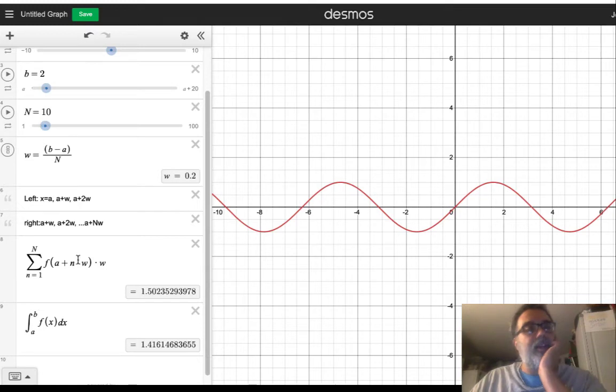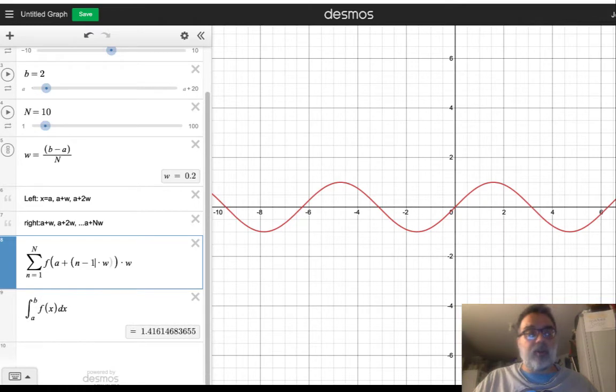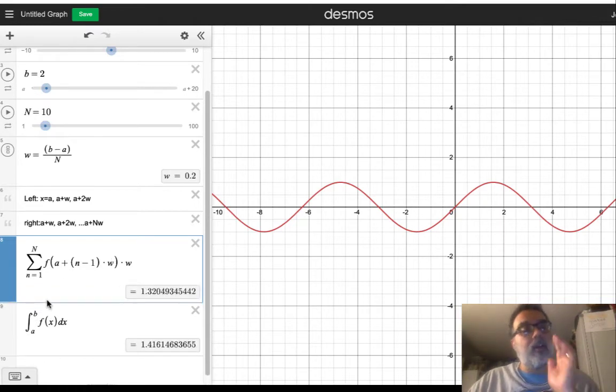So how could I change this to get the left? So when n is one, I don't want to add any w's, I just want a. So that makes me think that what we want for the left is to do n minus one here. So when n is one, that gives us zero w's. When n is two, it gives us one w. I think that's what we want.